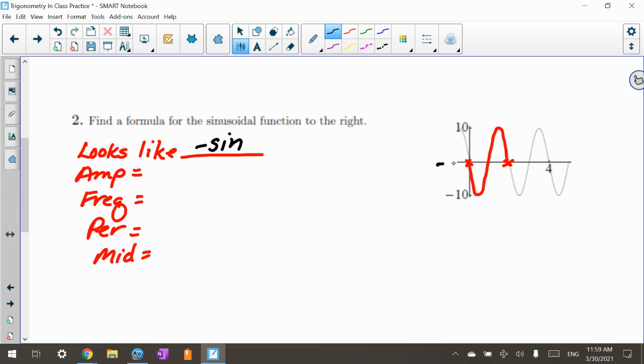The midline is the middle here. How do I find that? Well, that's the high, which is 10, plus the low, divided by 2, which is y equals 0. I know you think it's crazy, but trust me, you'll need to know that later. Amplitude is high minus my midline, so that's going to be 10.